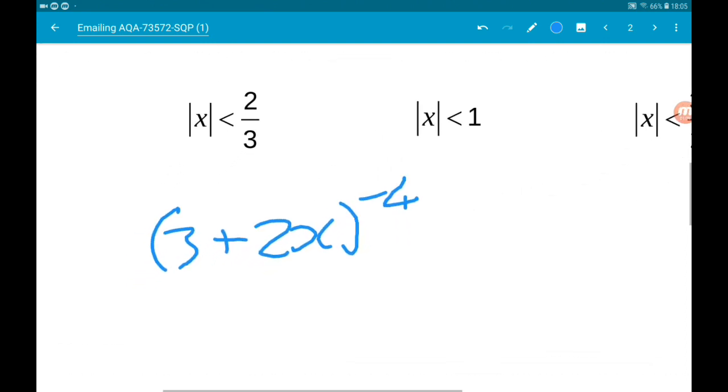So we can write that as 3 to the minus 4 times 1 plus 2 thirds x to the minus 4.